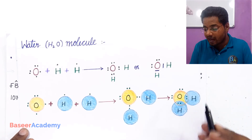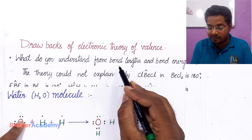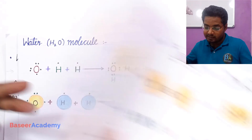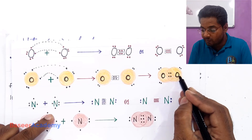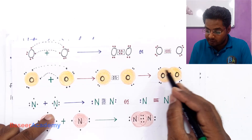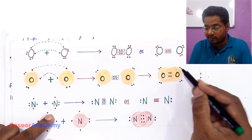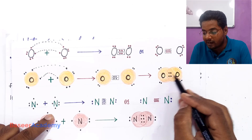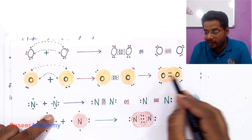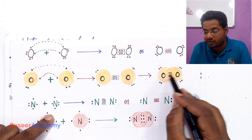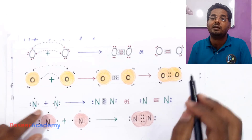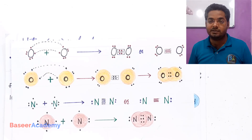Let us first understand the terms bond length and bond energies. Bond length is nothing but the distance between the nuclei of two atoms involved in covalent bonding. For example, this oxygen atom and the other oxygen atom are connected through a covalent bond — the distance between their nuclei is the bond length, or bond distance.